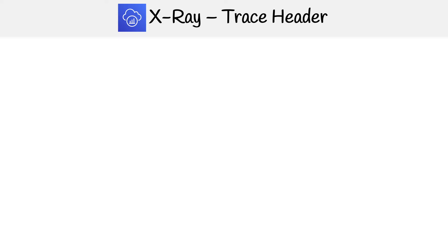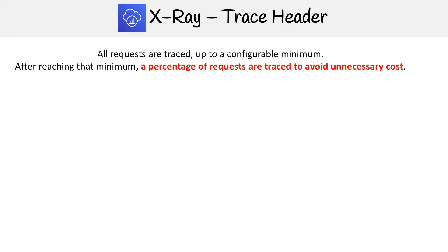Now we're going to take a look at the trace header itself. All requests are traced up to a configurable minimum, and after reaching that minimum, a percentage of the requests are traced to avoid unnecessary costs.